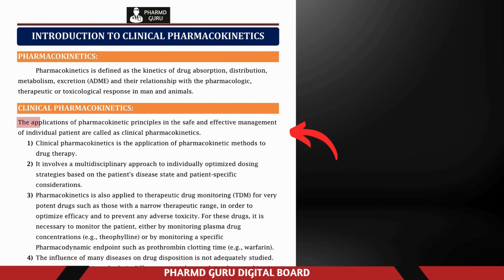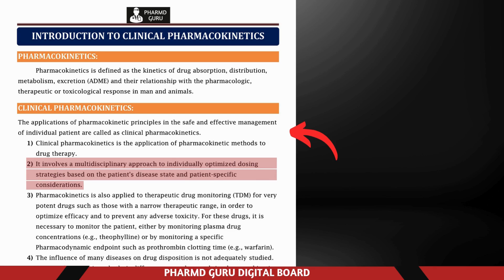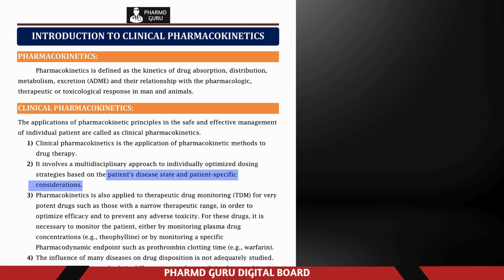Clinical pharmacokinetics is about applying the principles of pharmacokinetics to ensure that drugs are used safely and effectively for each patient. It involves understanding how a drug behaves in the body (ADME) and using this knowledge to adjust the dose and treatment strategy for individual patients. It involves a multidisciplinary approach — a team effort involving doctors, pharmacists, nurses, and other healthcare professionals — to individually optimize dosing strategies based on the patient's disease state and patient-specific considerations like age, gender, organ function, and genetics.